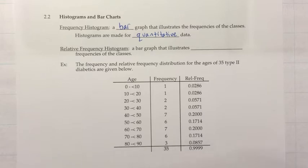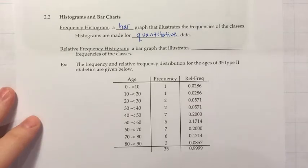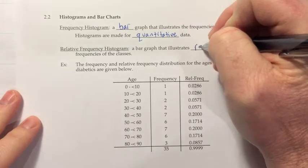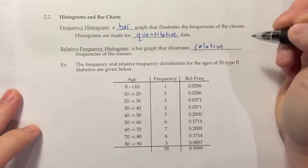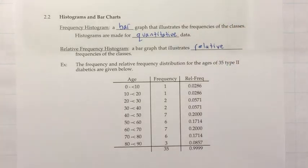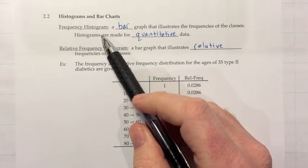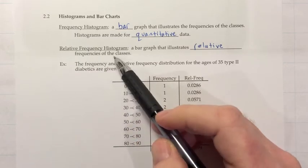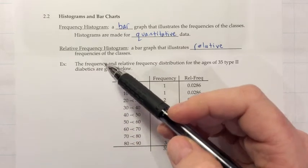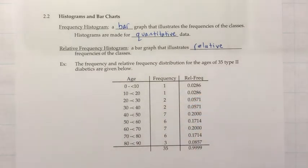We also have relative frequency histograms, which is a bar graph that illustrates the relative frequencies of the classes. When we do bar graphs in this class, the bars always go vertical instead of horizontal. You look at how tall the bars are — the height of the bar illustrates the value. For a frequency histogram, the height will be frequency; for a relative frequency histogram, the height will be relative frequency. Let's look at an example.